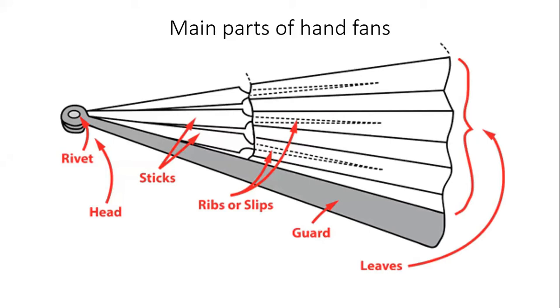Head: the lowest part of the sticks and guards through which the pivot pin/rivet passes to operate the opening/closing mechanism.